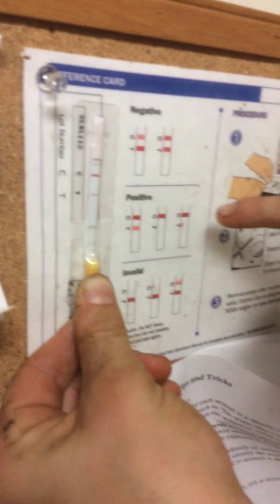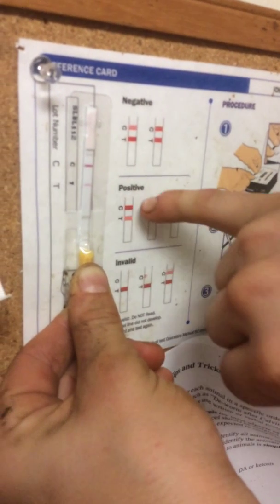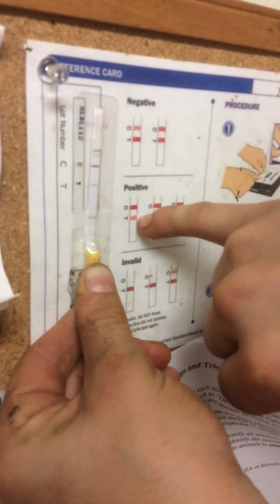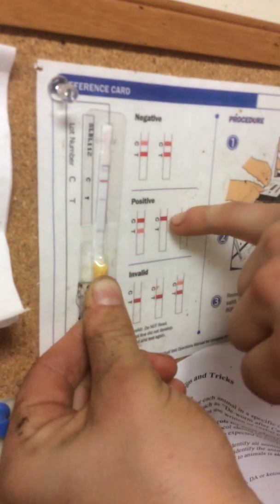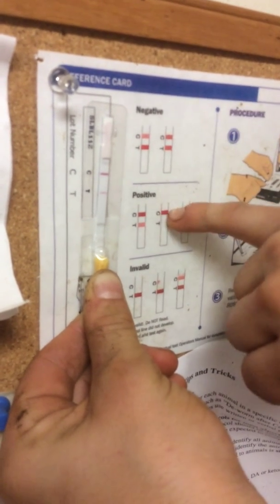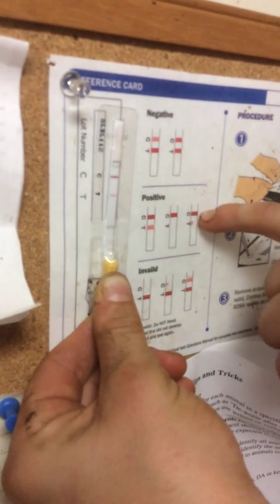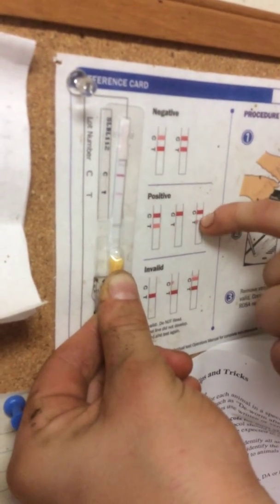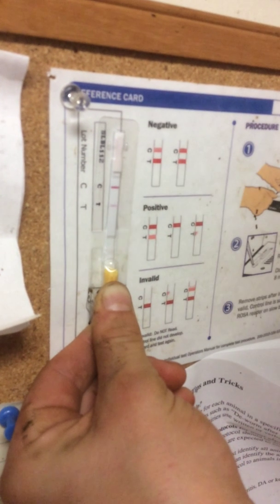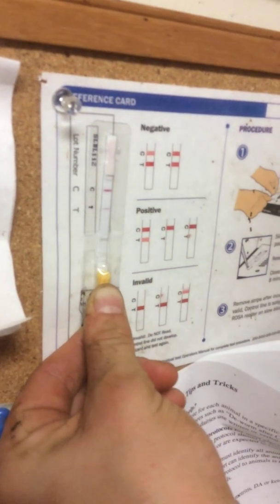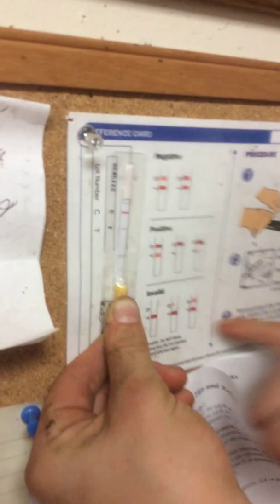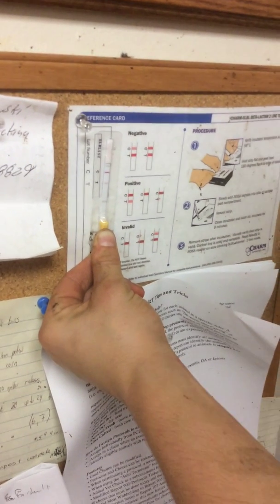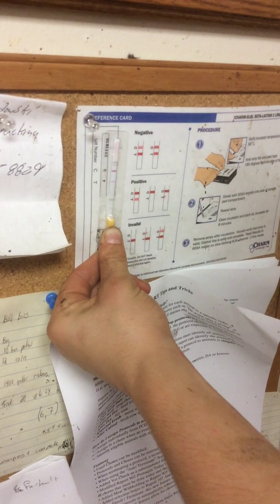Positive is when the top line is darker than the bottom line, or it just has that top dark line. If there's a top dark line and only a faint line on the bottom, those are some invalid tests that just didn't read properly.